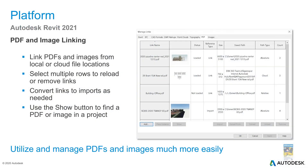For the platform-based enhancements, the PDF and image linking and inserting has been enhanced. In 2020, you could link in a PDF file and images, but they were a little difficult to manage — sorting, relinking, and so on. Now you can link PDF files and images from either local or cloud locations, see the saved path, select multiple rows to reload or remove links, convert links to imports, and use the show button to jump directly to a specific view.